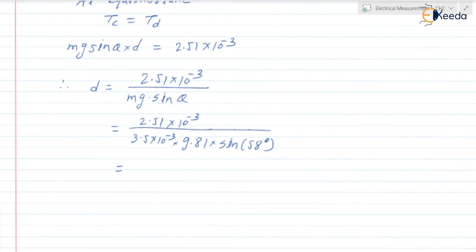You can check, 10 to the power minus 3, 10 to the power minus 3, it will get cancelled. So it is 86.2 millimeter. This is the d. d is nothing but the distance between weight and the spindle.